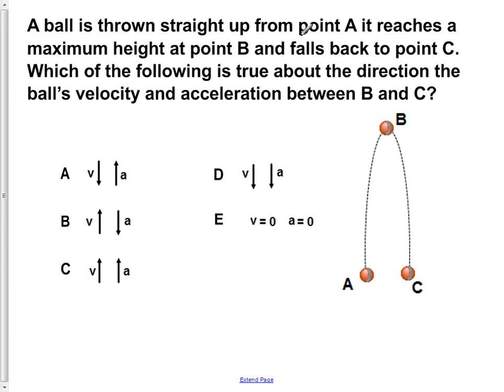A ball is thrown straight up from point A. It reaches a maximum height at point B and falls back to point C, which is at the same height as point A.